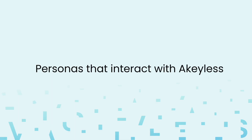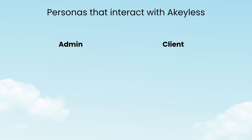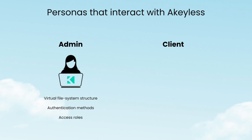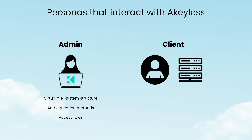Before continuing, it's important to understand the personas interacting with Akeyless. We generally see admin and end-user personas. An admin is the one who configures Akeyless within the organization — this includes defining the secrets virtual file system structure, creating and managing authentication methods and access roles, etc. An end-user, or what we're going to call a client, is generally any human end-user, usually an employee in the organization, who consumes secrets for their daily work, or a machine identity, also called a workload, which integrates with Akeyless to consume secrets.